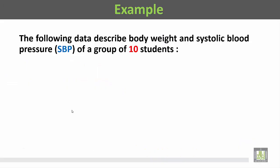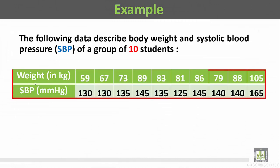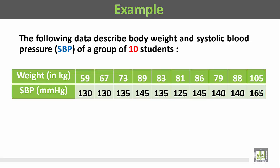Example: the following data describe the body weight and systolic blood pressure of a group of 10 students. The weight is in kilograms and the systolic blood pressure in millimeters of mercury. The first student has a weight of 59 kilograms and a systolic blood pressure of 130 mmHg, the second has 67 kilograms and 130 mmHg, and so on till student number 10, whose weight is 105 kg and systolic blood pressure is 165 mmHg.